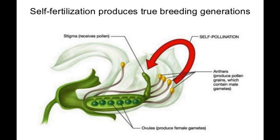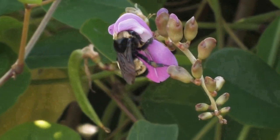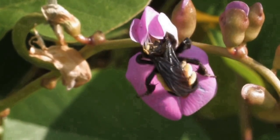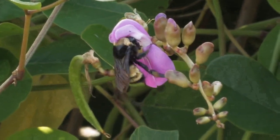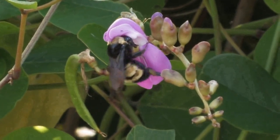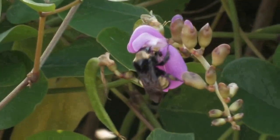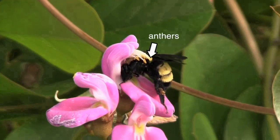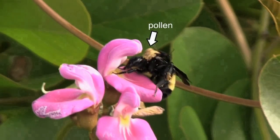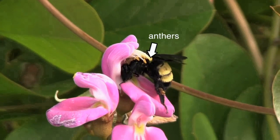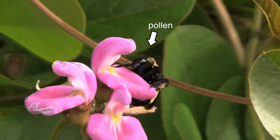Pollination in pea plants occurs in two ways: self and cross pollination. Self pollination occurs when the flowers are closed and pollen from the plant falls on the stigma of the same plant before the flowers open. This reduces the chance of genetic variability. For cross pollination, when a pollinator such as a bee enters the flower to drink nectar, it lands on the petals and inserts its proboscis. This pushes the wing petal and keel petal down, and pollen grains from the anthers are dusted on the body of the bee and also attached to its proboscis.